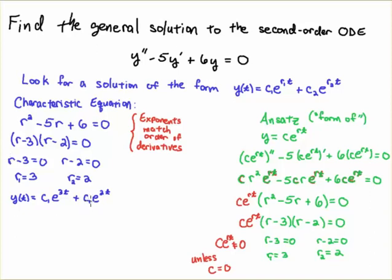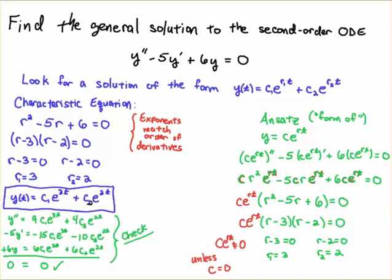Let's check that solution and verify. If I take all the respective derivatives, I should get zero as far as satisfying the ODE. When I take the derivatives here, the three drops down twice I get a nine, the two drops down twice I get a four.